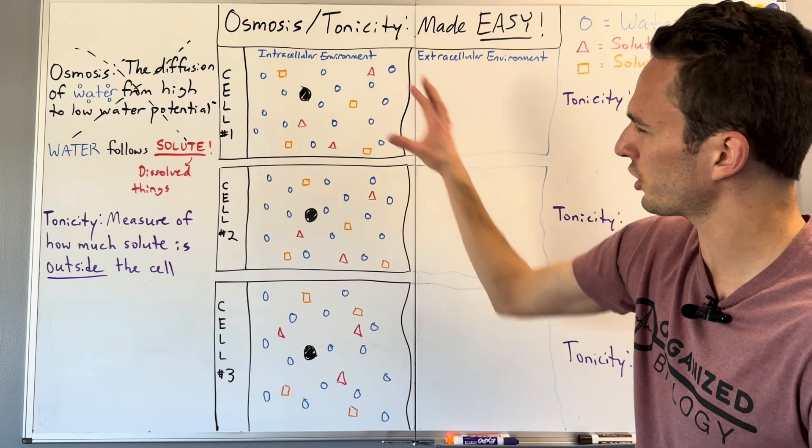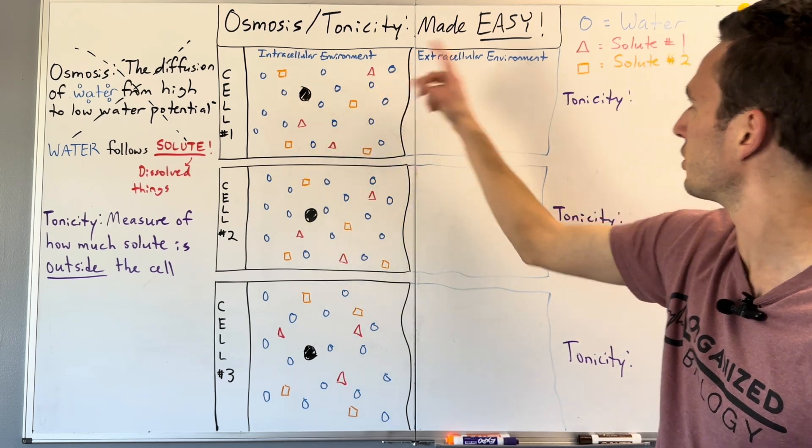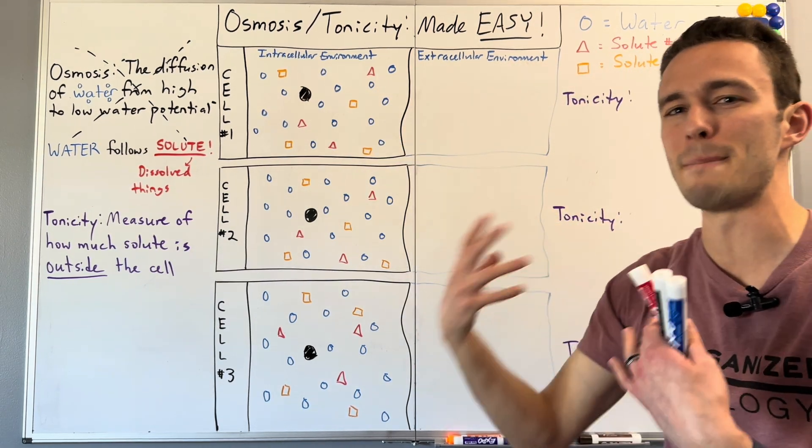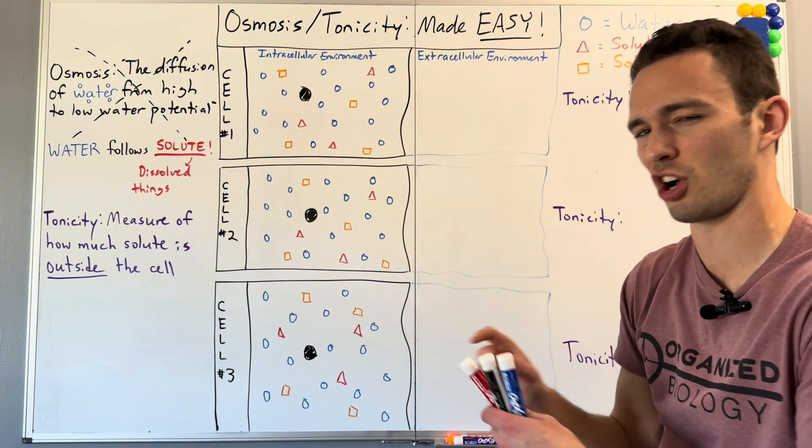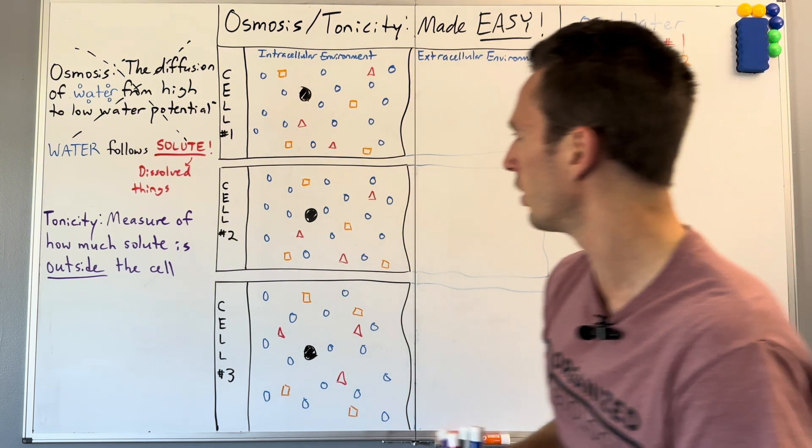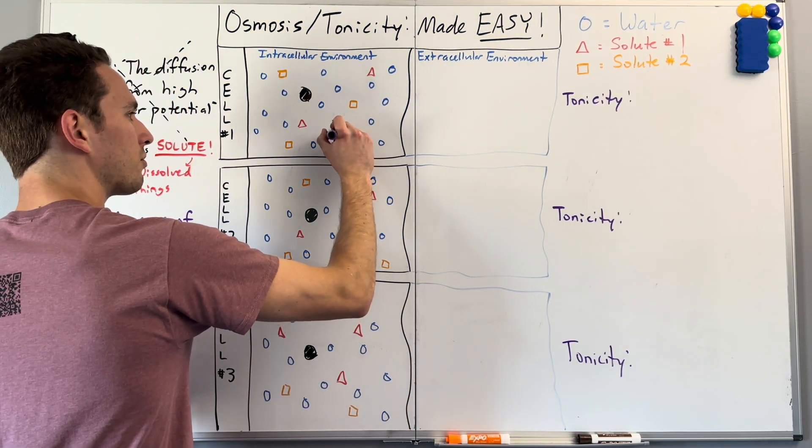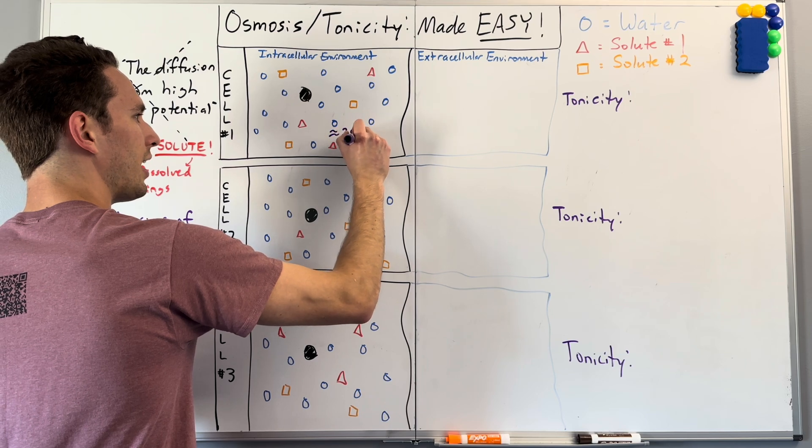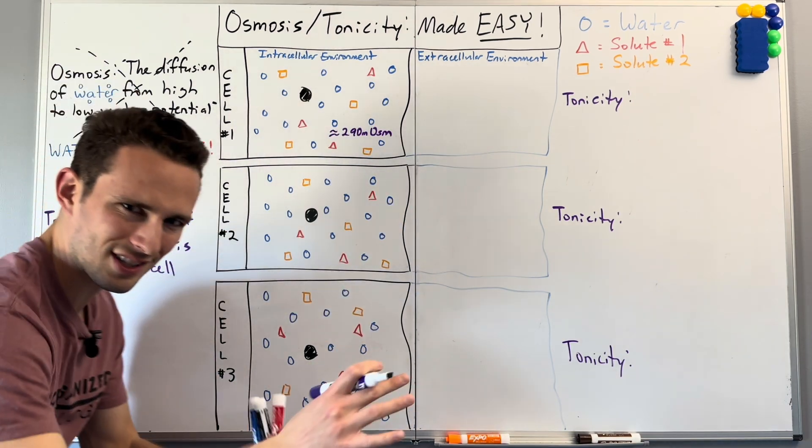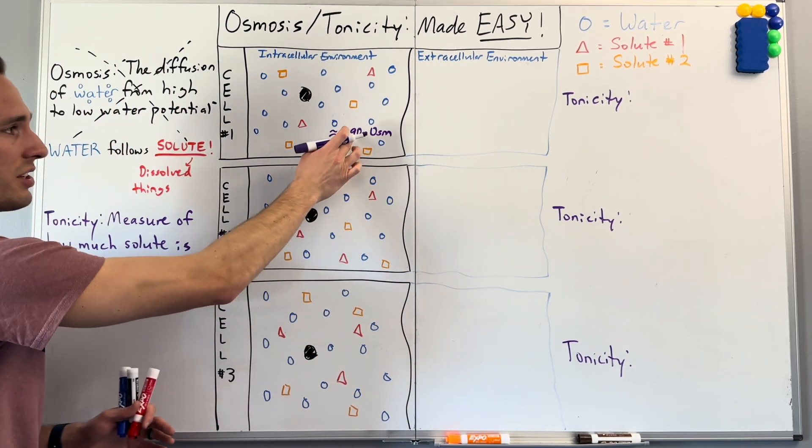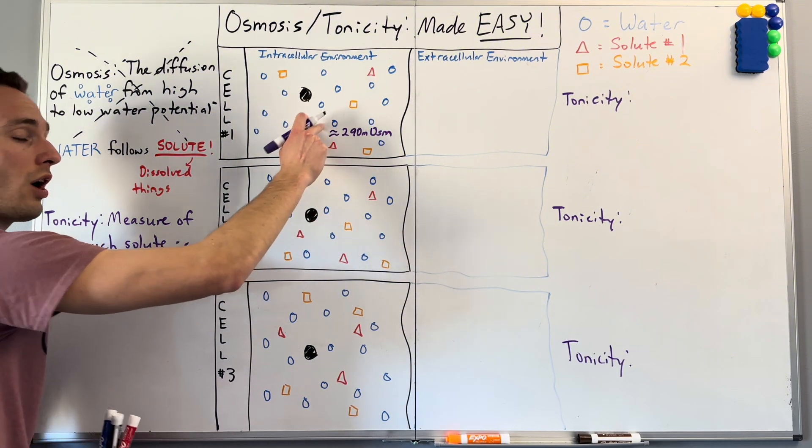So let's just start with an example right off the bat. We've got a cell here with a good amount of water in it, but we've got some solutes here, solute one and number two. And if we were to measure the concentration of how much solute is in that water, we would come up with a value that's around 290 milliosmoles. Now, don't get scared by the milliosmol thing. That's just basically saying how much solute is dissolved in the water.